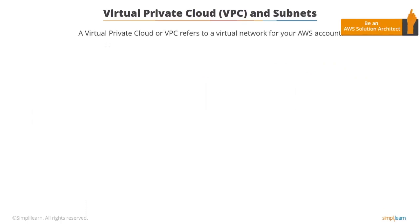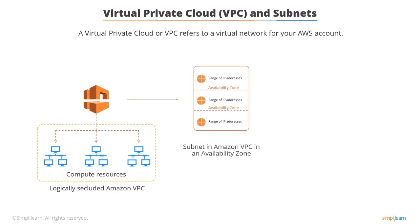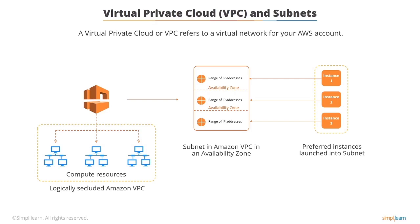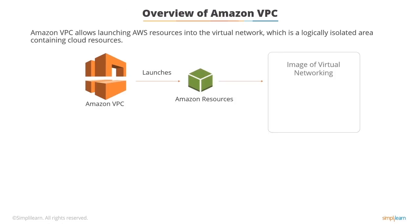A virtual private cloud or VPC refers to a virtual network for your AWS account in the AWS cloud. A VPC is logically secluded from other virtual networks to ensure powerful networking and security for your compute resources. A subnet in Amazon VPC refers to a segment of the range of IP addresses and is a subdivision in an availability zone. Preferred instances are launched into this subnet. A subnet allows you to group instances according to your operational and security requirements.